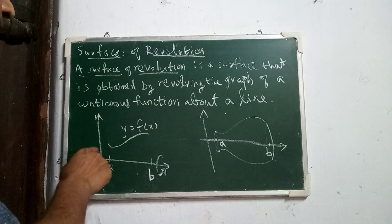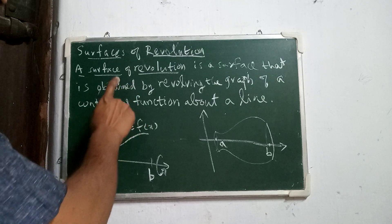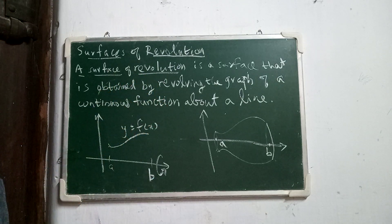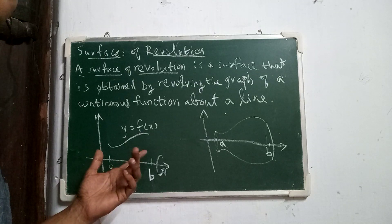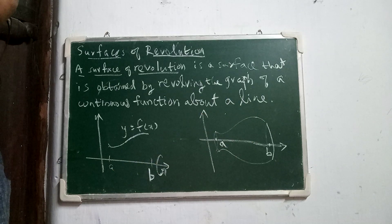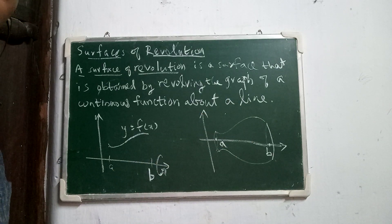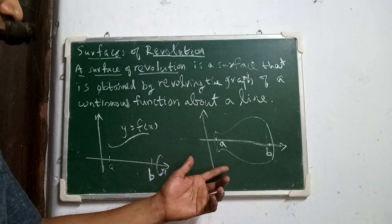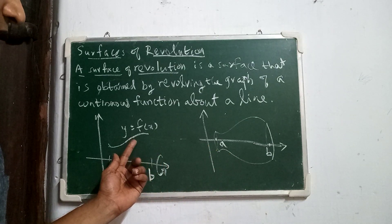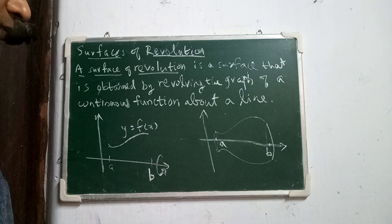We will define formally what is meant by surface of revolution. A surface of revolution is a surface obtained by revolving the graph of a function about a line. That line may be the x-axis, the y-axis, or something else. This is an example of a surface of revolution obtained by revolving the graph about the x-axis.